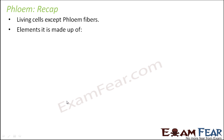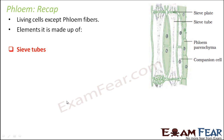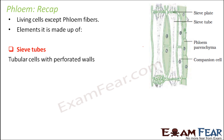We have sieve tubes, which are tubular structures. You can see here — these sieve tubes are the tubular structures which actually help in conduction. They are tubular cells with perforated walls. On both ends they have sieve-like structures called sieve plates, and otherwise it is a tube-like structure.